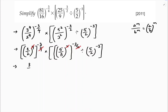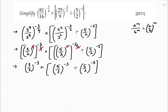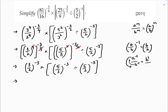Now we have (3/2) whole power minus 3, into (5/3) whole power minus 3, divided by (5/2) whole power minus 3. If the power is negative, then (a/b) whole power minus 1 equals b/a — that is, to make the power positive, just write the reciprocal. So (3/2) becomes (2/3) whole cube, and (5/3) becomes (3/5) whole power 3.